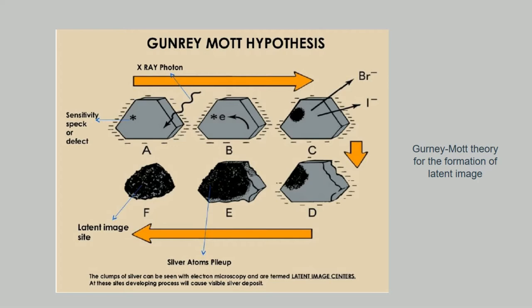F is the formation of the latent image. Due to the repeated process, the latent image is formed. The latent image is an invisible image produced by the exposure of the film.